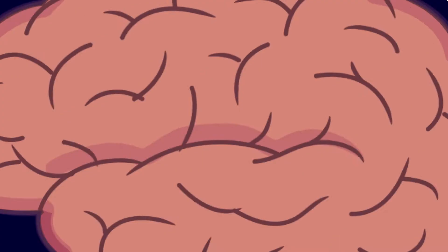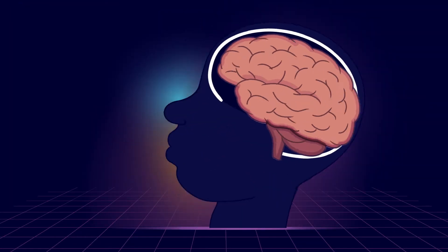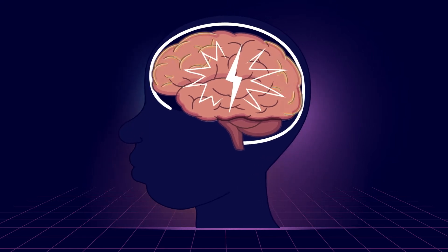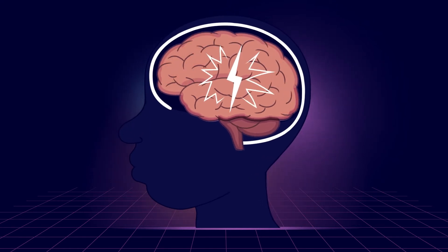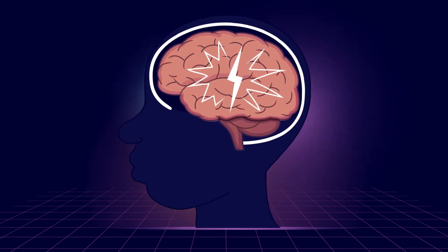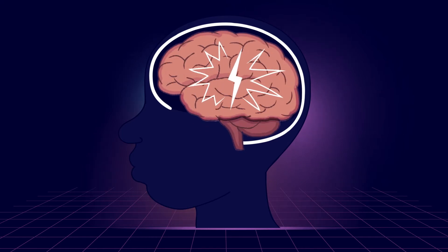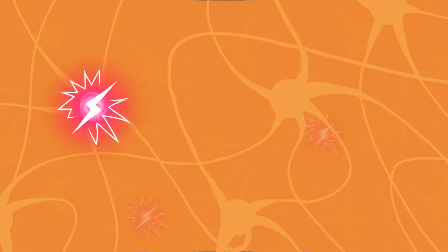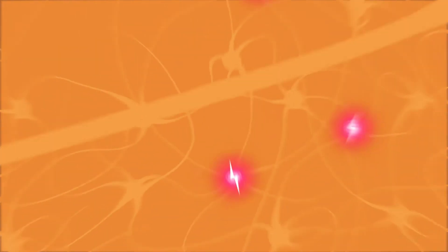A concussion is caused by a bump, blow, or jolt to the head, face, neck, or body that transmits significant force to the brain, causing it to shift or twist inside the skull. These sudden movements of the brain can lead to changes in brain chemistry that show up as signs and symptoms we associate with a concussion.